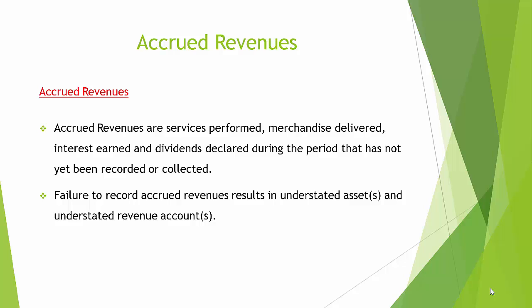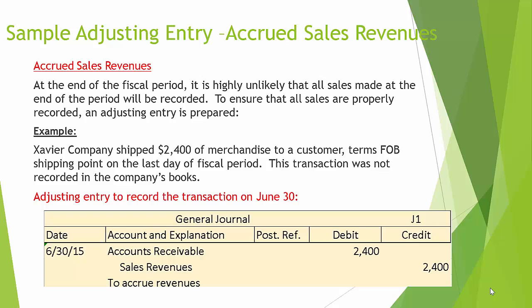Accrued revenues are service performed, merchandise delivered, interest earned, and dividends declared during a period that have not yet been recorded or collected. Failure to record accrued revenue results in understated assets and understated revenue accounts. Here is a sample adjusting entry for accrued sales revenue. At the end of the fiscal period, it is highly unlikely that all sales made at the end of the period will be recorded. To ensure that all sales are properly recorded, an adjusting entry is prepared. Example: Xavier Company shipped $2,400 of merchandise to a customer, terms FOB shipping point, on the last day of the fiscal period. This transaction was not recorded. The adjusting entry on June 30th would debit accounts receivable $2,400 and credit sales revenue $2,400.